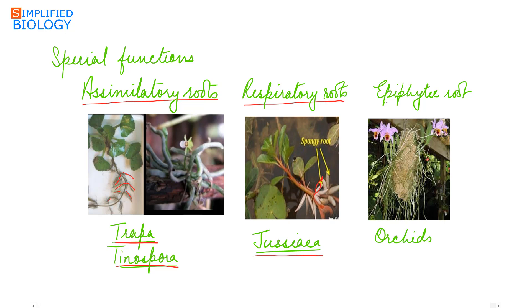Last are epiphytic roots, seen in epiphytes like orchids. These are plants growing on the branches of trees. They have special roots that hang in the air, by the help of which they absorb moisture from the atmosphere. These roots have the velamen tissue, which helps to absorb moisture from the atmosphere.